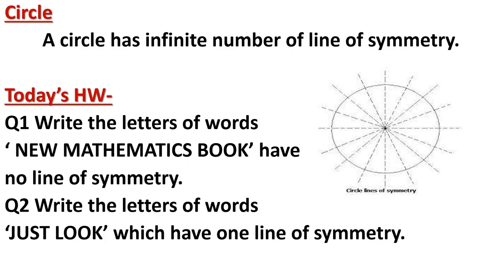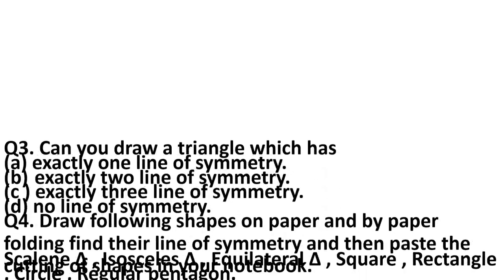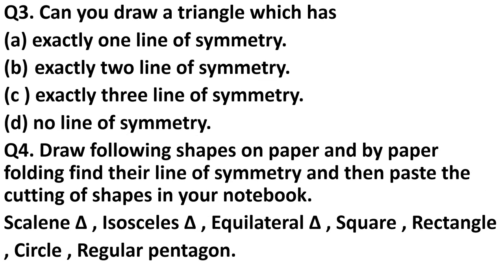Question 3: Can you draw a triangle that has (a) exactly one line of symmetry, (b) exactly two lines of symmetry, (c) exactly three lines of symmetry, (d) no line of symmetry? For each part, make the triangle and draw its line of symmetry. For example, exactly one line of symmetry corresponds to an isosceles triangle.